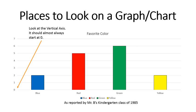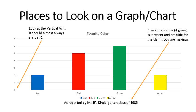Three things to look at. One: the vertical axis should start at zero. Number two: check the source — is it recent, is it credible, is it strong enough to support the claim you're trying to make? If this is Mr. Buffington's kindergarten class favorite colors, I can't use that to predict the entire world population's preference. Three: your horizontal axis should be consistent — if it's time, it should be chronological and consistent one to the next. I hope that lesson was helpful for reading graphs, especially in the news, and helps you think a little more critically when you see those graphs.